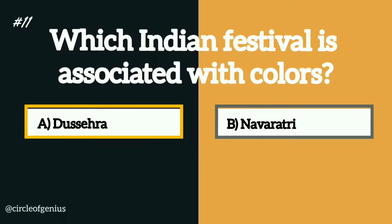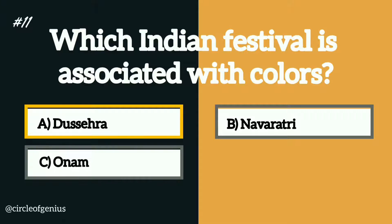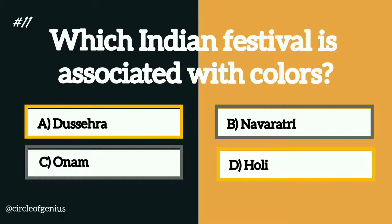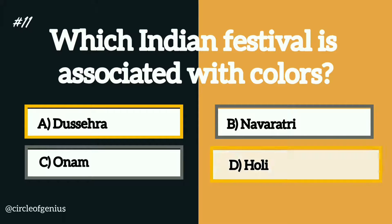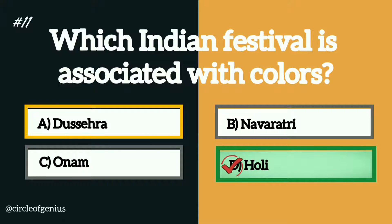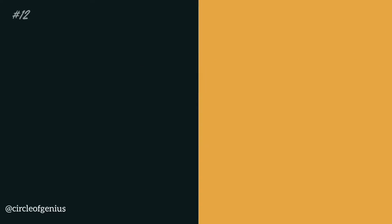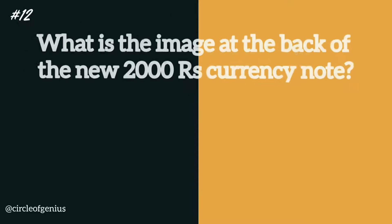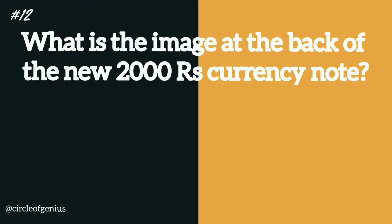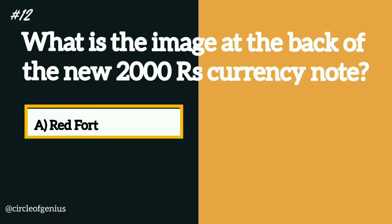The correct answer is option D, Holi. Question number twelve: what is the image at the back of the new 2000 rupees currency note? Option A: Red Fort, B: Mangalyaan, C: Swachh Bharat, D: Hampi.